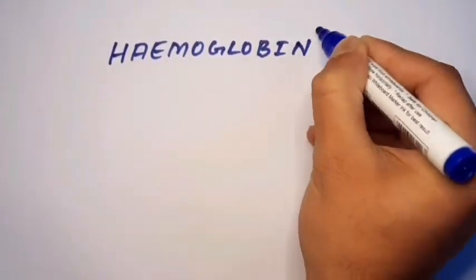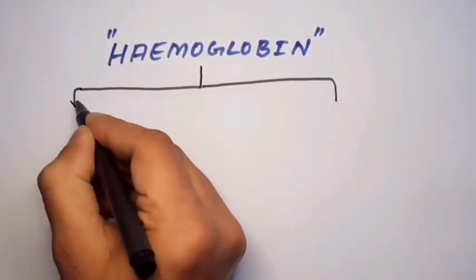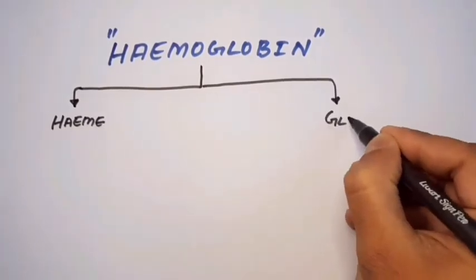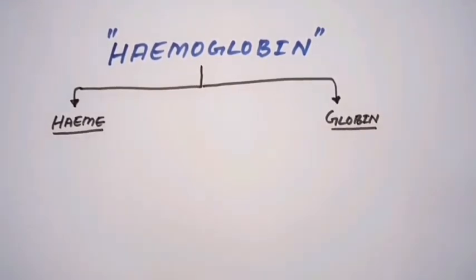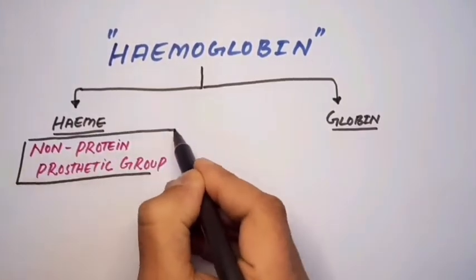Haemoglobin consists of two parts: the haem part and the globin part. Haem is the non-protein or prosthetic group, while globin is the protein part.